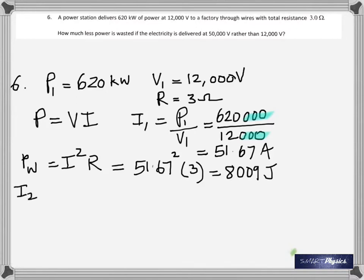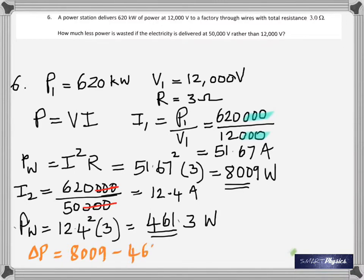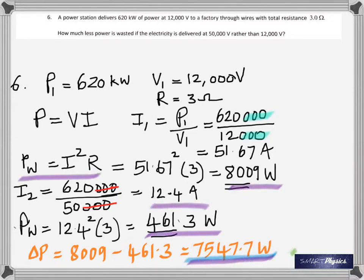But if the voltage used was 50,000, then the current would have been smaller. Now we find the current is only 12.4 amperes, and therefore the power wasted would be 12.4 squared times 3, 461.3 watts. So the change or the difference is 7547.7. So now we know that whenever electricity is transmitted across those cables, it has to be done at a high voltage so that the current is as small as possible. Why should the current be as small as possible? So that less power is wasted.